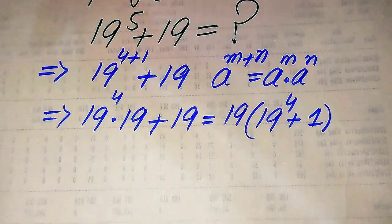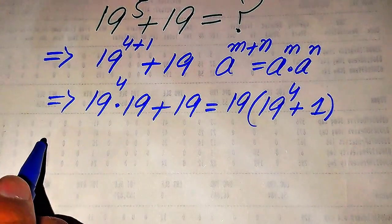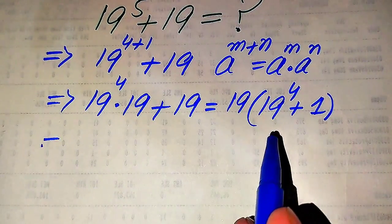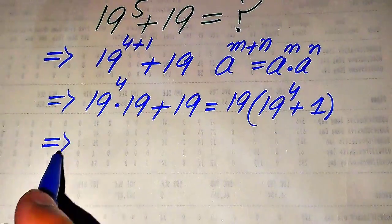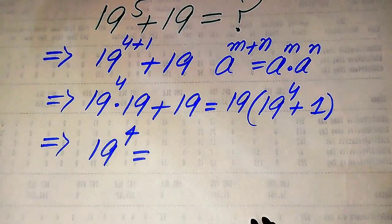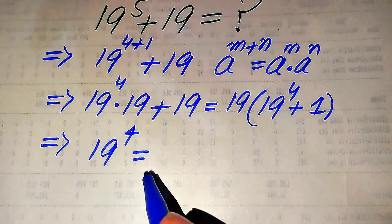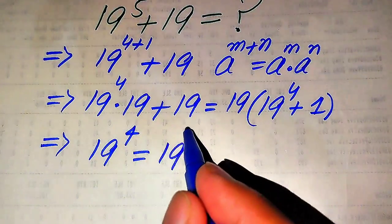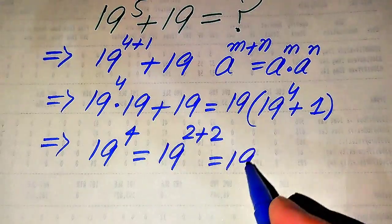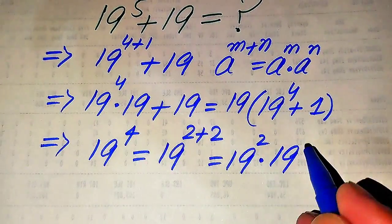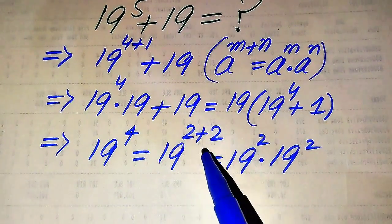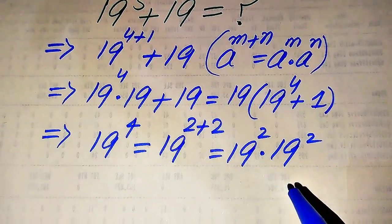Our next target is to find the value of 19 to the power of 4, then substitute it back. We write 19 to the power of 4 as 19 to the power of 2 plus 2, which equals 19 squared multiplied by 19 squared. So we again apply this exponent law, breaking the exponent to get 19 squared times 19 squared.